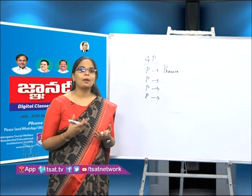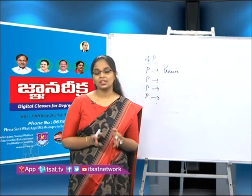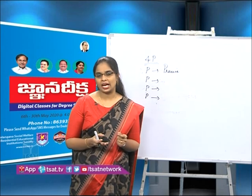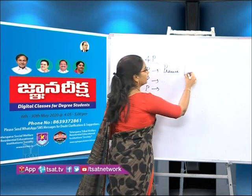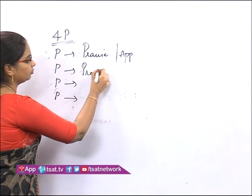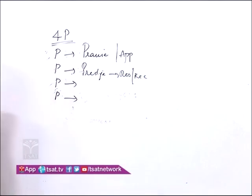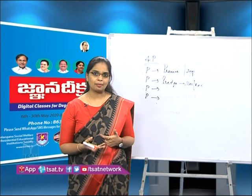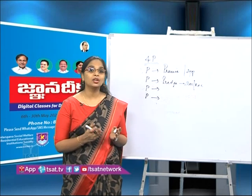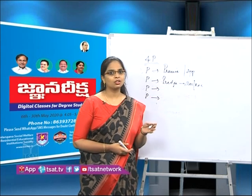The second P is prestige — that is, respect or recognition. If the organization respects its employees or recognizes their work, that person feels very happy, feels he is part of the organization, and tries to work hard to fulfill the needs of the organization. Every organization has to respect its employees and recognize their work in order to get the work done.